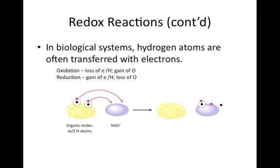Here we see an organic molecule with two hydrogen atoms and a molecule of NAD+, the importance of which we will discuss at another time. In the reaction between the organic molecule and the NAD+, the organic molecule loses both hydrogen atoms. As a result, the organic molecule is oxidized. Because oxidation and reduction are coupled reactions, the NAD+ must be reduced — it accepts one complete hydrogen atom and the electron from the other hydrogen atom to form NADH. In a biological system, we wouldn't be able to see the moving electrons, but we would be able to evaluate the change of the compound from NAD+ to NADH. Because the compound gained a hydrogen, it was reduced.